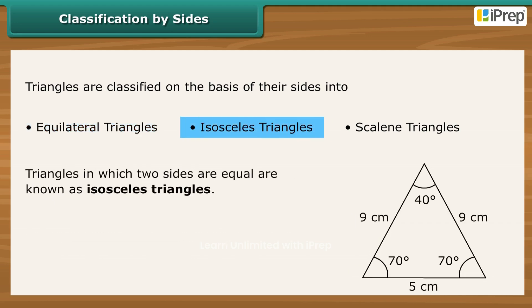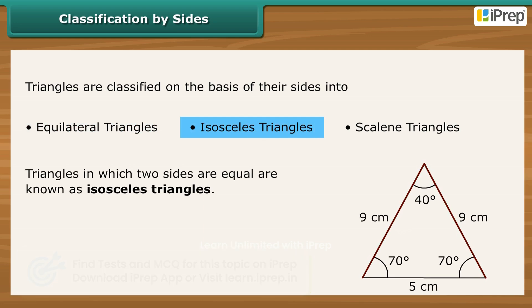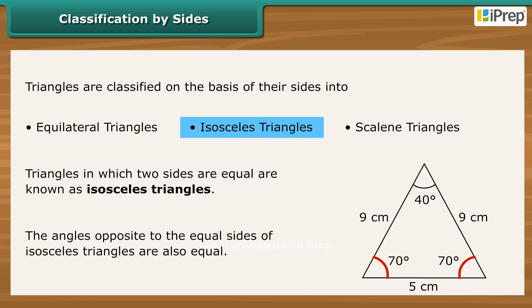Triangles in which two sides are equal are known as Isosceles Triangles. The angles opposite to the equal sides of Isosceles Triangles are also equal.